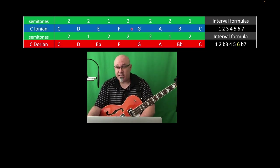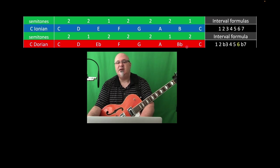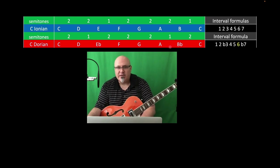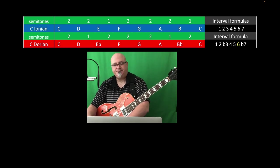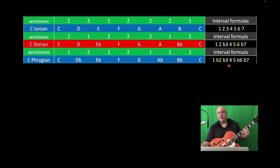The way you can find what key any of these modes belongs to — with the root note held constant — is simply look for the 2, 2, 1, 2, 2, 2, 1 pattern. That tells you which major key you're in. Then you would move the mode pattern to whatever root note you need for the key you're playing in, and you play the right notes every time. It works like a charm.